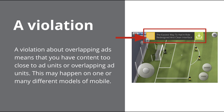If you receive a violation notice from the policy team about overlapping content, you may have ad units within the app that are too close to the content, or even overlapping the content on the app. For example, the banner ad on the right is covering content on the app.